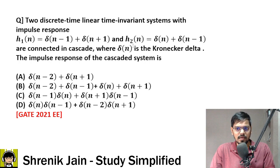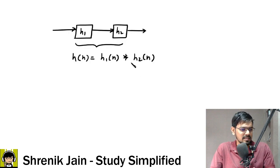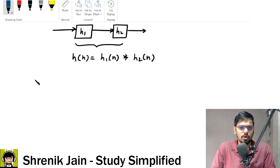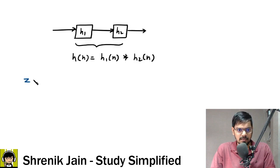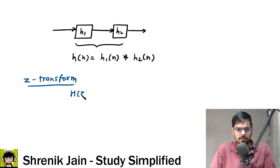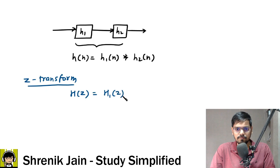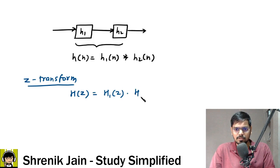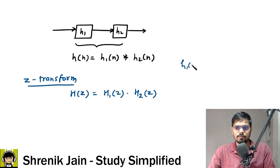h1(n) and h2(n) are given as functions, and time-domain convolution is time-consuming. So we go to the frequency domain. Since we are dealing with discrete time, we use the Z-transform. Then H(z) = H1(z) · H2(z) — convolution becomes multiplication, which is the benefit of the frequency domain.